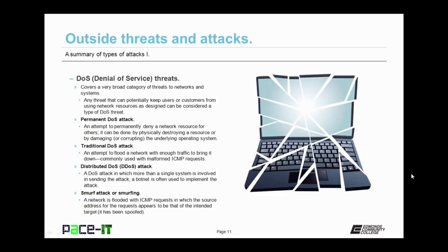Now let's conclude by talking about the denial of service threat, or the DOS threat. This covers a very broad category of threats to networks and systems. Any threat that can potentially keep users or customers from using network resources as designated can be considered a type of denial of service threat, and there are many DOS attacks and threats out there. There's the permanent DOS attack, which is an attempt to permanently deny a network resource for others. It can be done by physically destroying a resource or by corrupting the underlying operating system beyond repair. Then there's the traditional DOS attack, which is an attempt to flood a network with enough traffic to bring it down, keeping legitimate users from accessing it. The traditional DOS attack is commonly used with malformed ICMP requests.